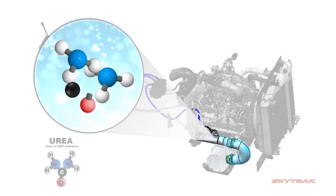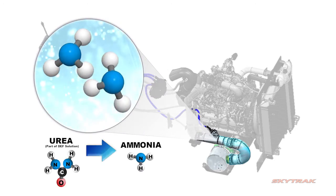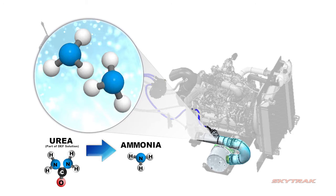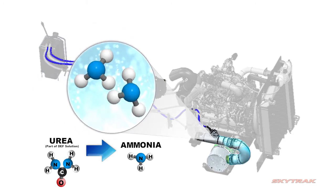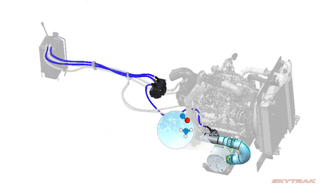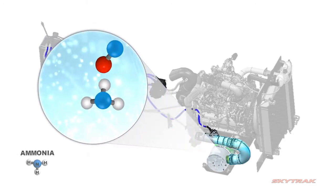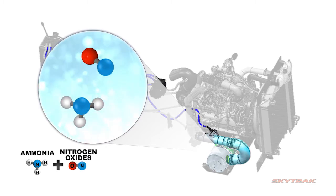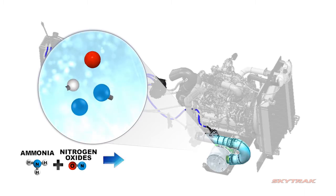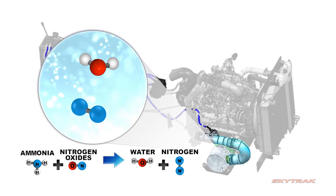The heat in the exhaust breaks the DEF down into ammonia. Ammonia is reacted in the SCR catalyst with nitrogen oxide in the exhaust stream to reduce nitrogen oxide emissions.